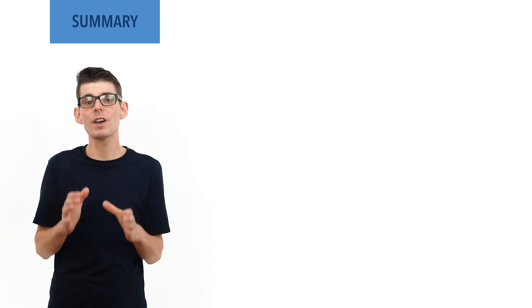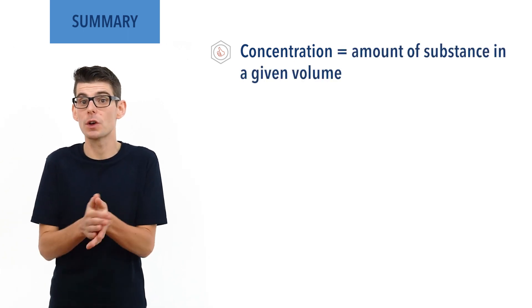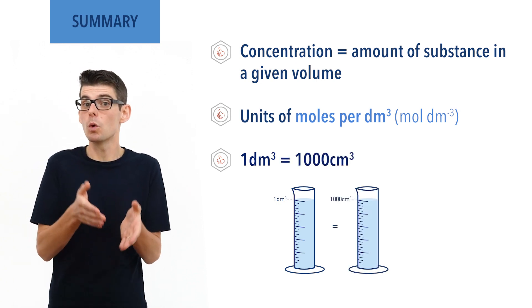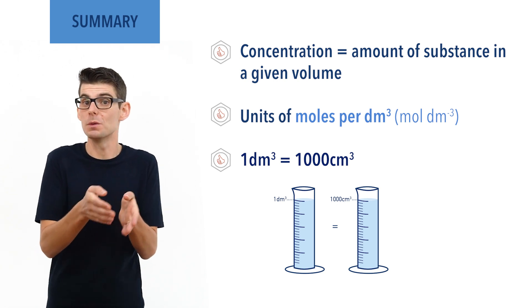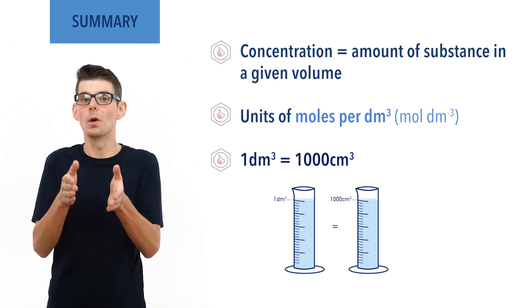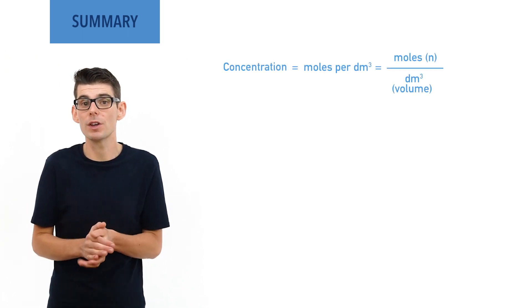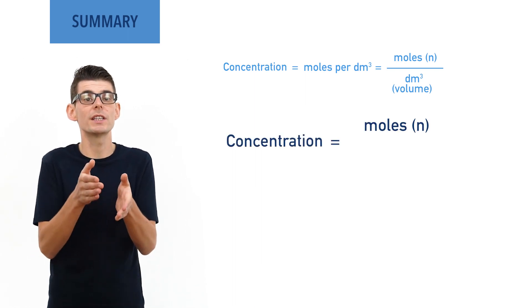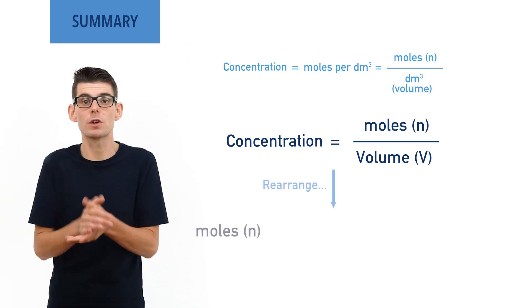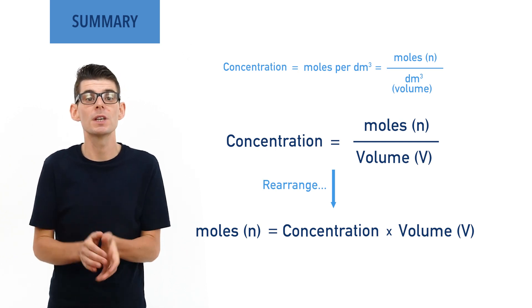To summarize: concentration is a way of describing how much of a solute or substance there is in a given volume of solution. The usual units are moles per decimetre cubed. One decimetre cubed equals 1000 centimetres cubed, because 1 dm × 1 dm × 1 dm = 10 cm × 10 cm × 10 cm = 1000 cm³. To calculate concentration, use: concentration = moles of solute ÷ volume of solution. To find moles, use: moles = concentration × volume. The volume must be in decimetres cubed; divide by 1000 to convert from centimetres cubed.